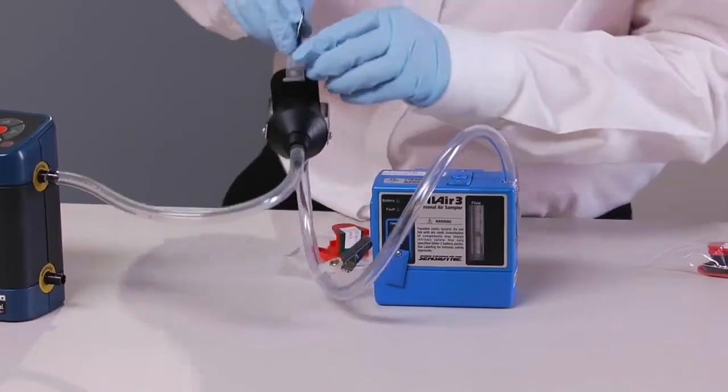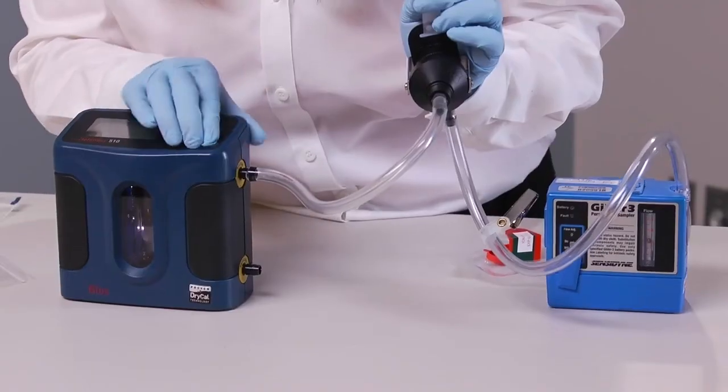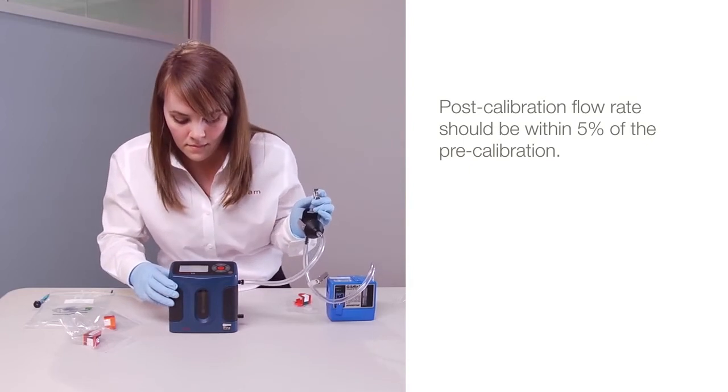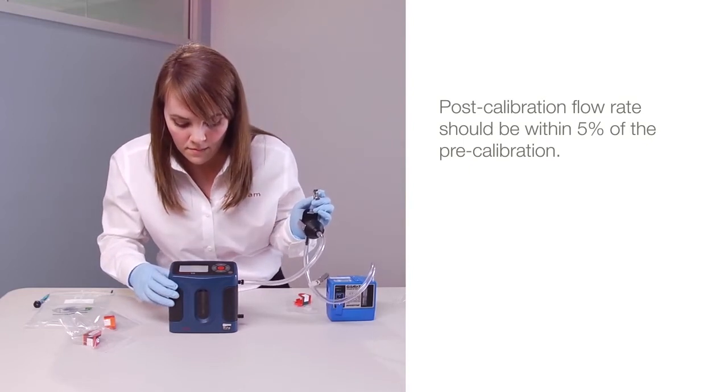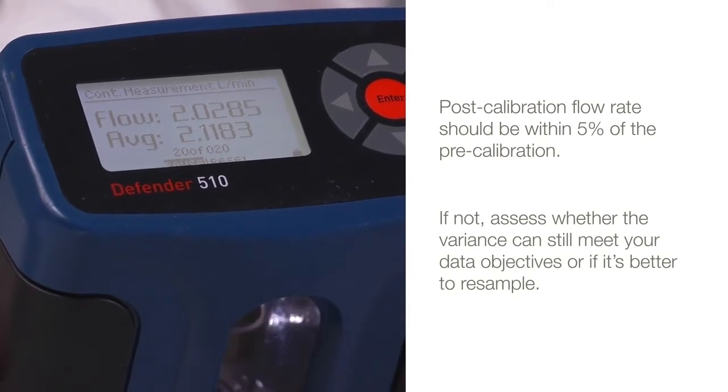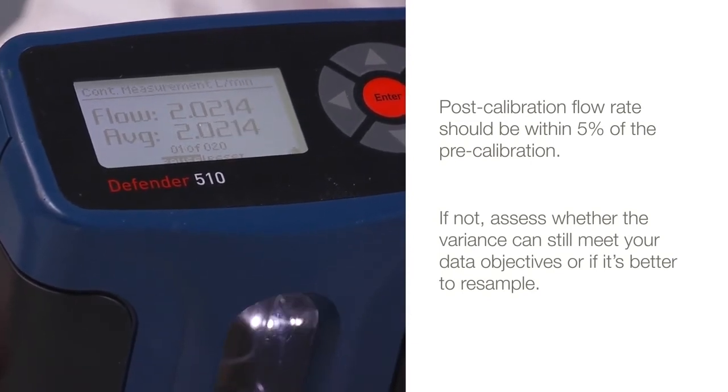To finish, use the calibration sampler and adapter to check the flow rate of the pump. The post-calibration flow rate should be within five percent of the pre-calibration. If it is not, then assess whether the variance can still meet your data objectives or if it's better to re-sample.